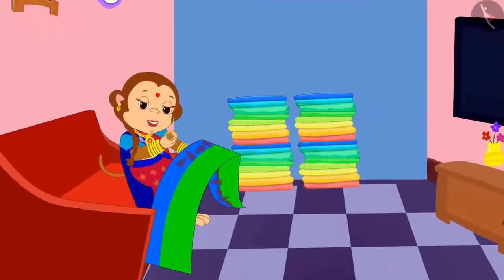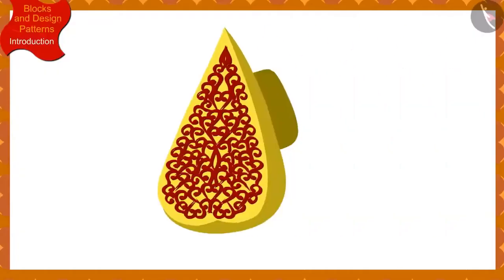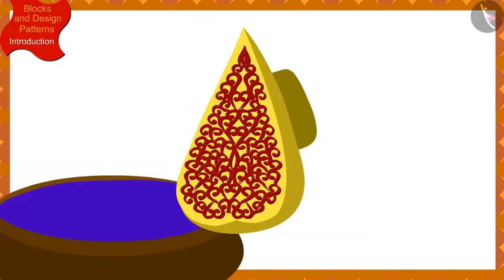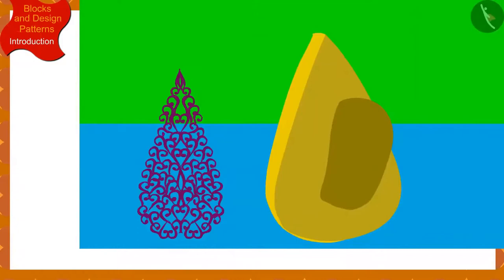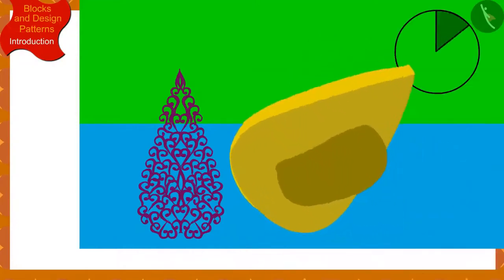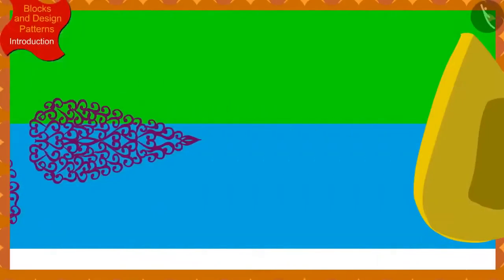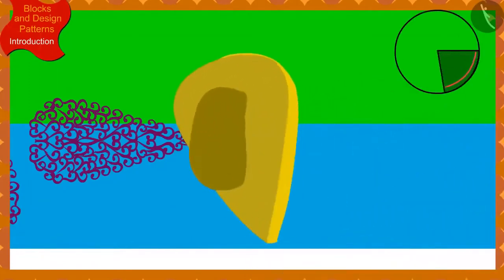Banno returned home and started designing a sari for Chanda. Banno has a block of this design. She first dipped her block in a box of color and made an impression on the sari. She then made a second impression by dipping the block in the box of color again, this time rotating the block a quarter in the clockwise direction. Banno continued making the design by every time dipping the block in the box of color and rotating it a quarter from the previous impression.